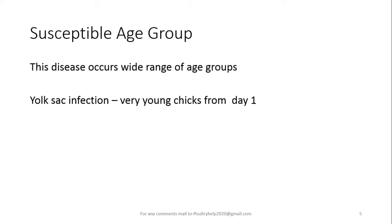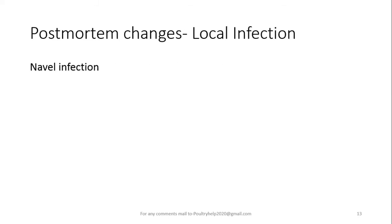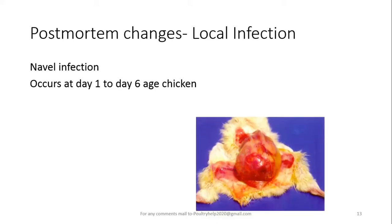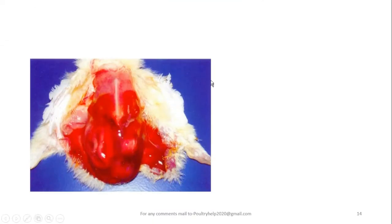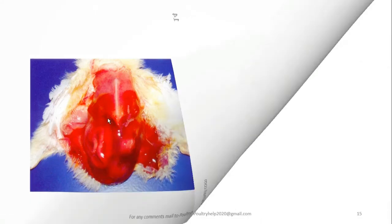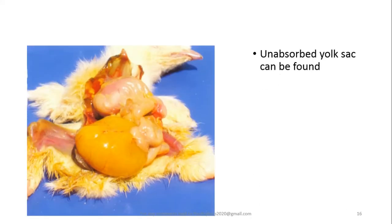The susceptible age group that E. coli can infect is a wide range. Yolk sac infection can be seen in very young chicks from day one. Egg peritonitis can be seen in adults. Navel infection occurs at day one to six weeks of age, and can extend to 15 days. It is characterized by reddening and tissue edema in the umbilical region, as you can see here — reddening and tissue edema. In some cases, unabsorbed yolk can also be found with the infection.